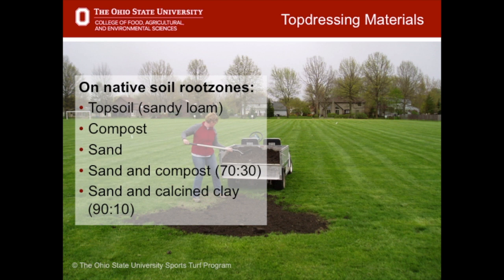There are numerous top dressing materials available. A golden rule of top dressing is to match the material with the underlying soil. This is particularly important on sand root zones. On native soil root zones, top dressing materials can include a good quality sandy topsoil, pure sand, a combination of sand and compost, a combination of sand and calcine clay, or any combinations of these materials. If one of the goals of top dressing is to improve drainage, then sand is typically the governing material since adding it will improve infiltration rates over time.